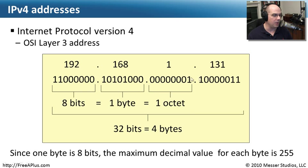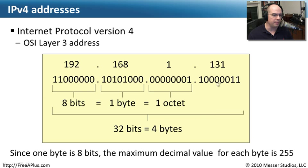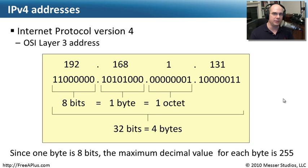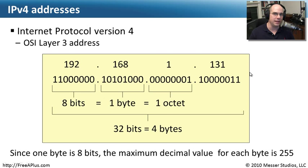IP addresses, therefore, if you add up all of those ones and zeros, are 32 bits long, or four bytes long. When you start looking at it that way, you can see how we're able to break apart all of these little pieces of the IP address to figure out where the networks are, where the hosts are on a network, and how many hosts you can put on a network — all things your network administrator needs in order to give you the right IP address to communicate across the network.